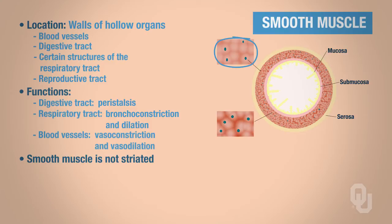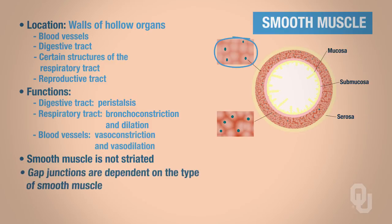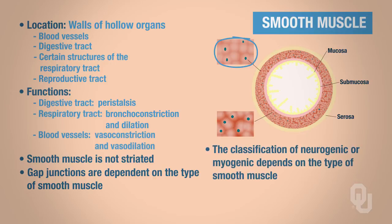As to whether or not smooth muscle has gap junctions, that is dependent on the type of smooth muscle — we will return to that concept later. We also cannot classify all smooth muscle as either myogenic or neurogenic, as that too depends on the type of smooth muscle. We can, however, classify smooth muscle as involuntary muscle.